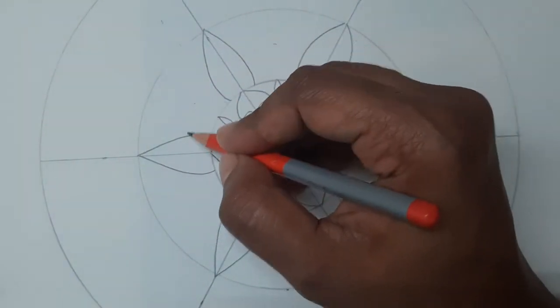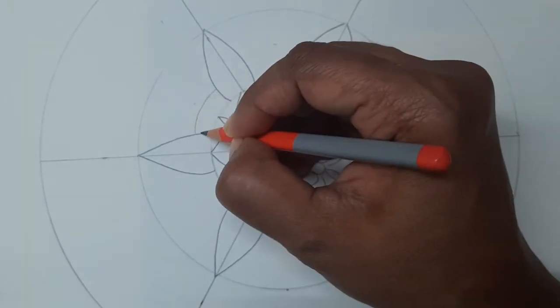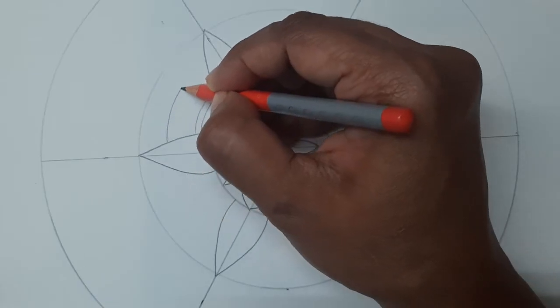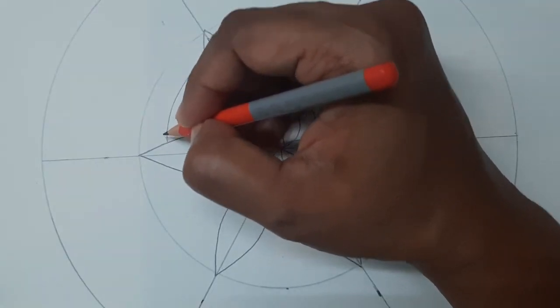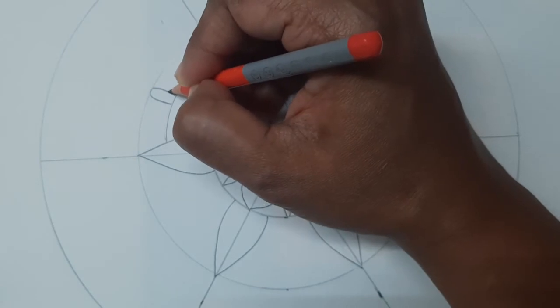Now in between these two petals, any two petals, we would draw two small arcs and draw one more arc. At the top of this arc we would draw sharp and thin petals.